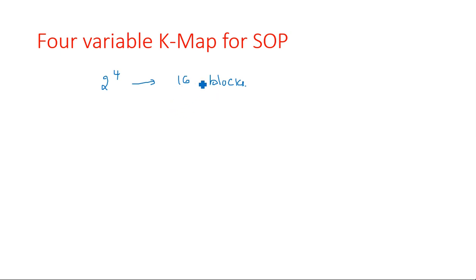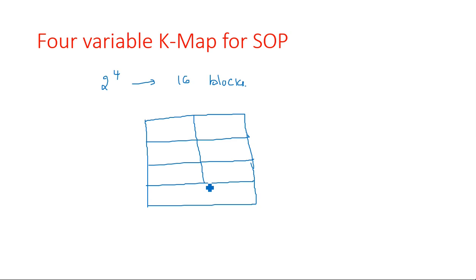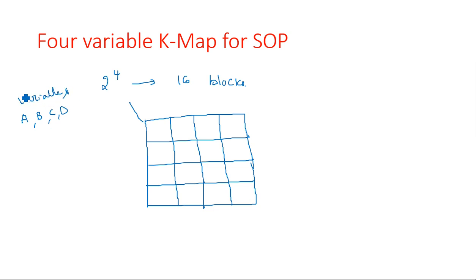In SOP we map logic ones; for POS we map logic zeros. The four variable K-map will have 16 boxes total. Let us consider four input variables A, B, C, D. I am taking A, B on one side and C, D on the other side.